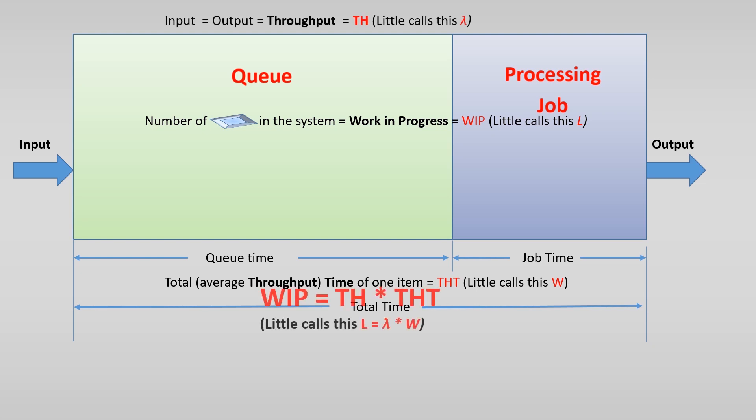The relationship between the times, the work in progress and the throughput is as follows. The number of items in the system, so the work in progress, equals the throughput (the number of products going through the system) multiplied by the total time it takes.